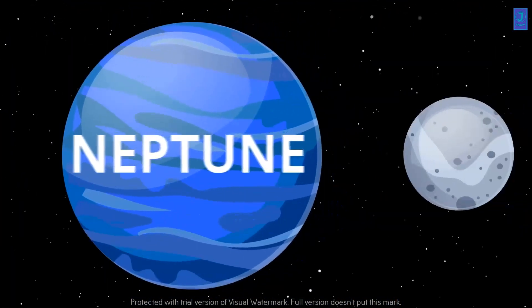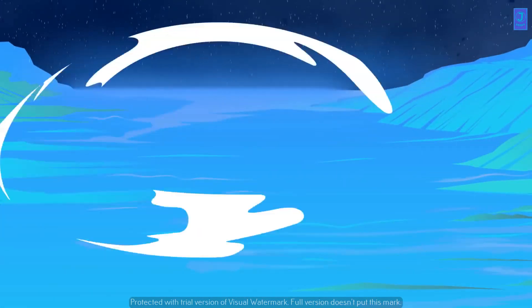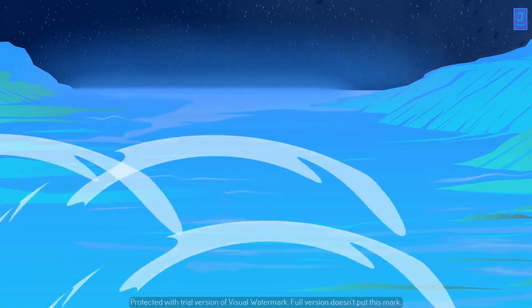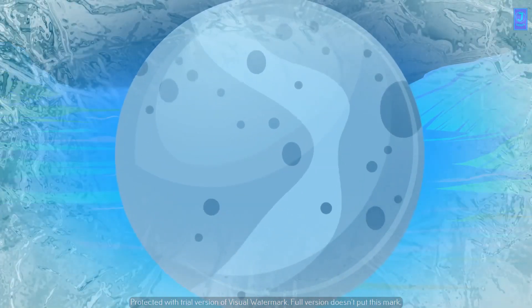Neptune and its moon Triton. Yeah, Neptune is known for strong winds, sometimes faster than the speed of sound, the fastest detected yet in the solar system. One of 13 moons of Neptune, Triton, is considered to be the coldest place in the whole solar system.